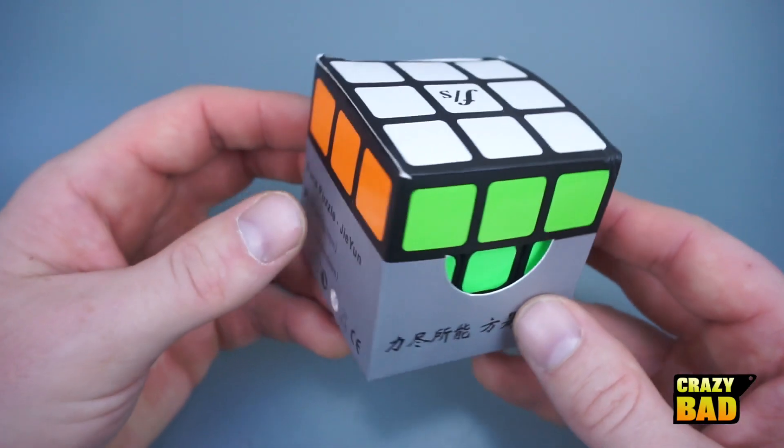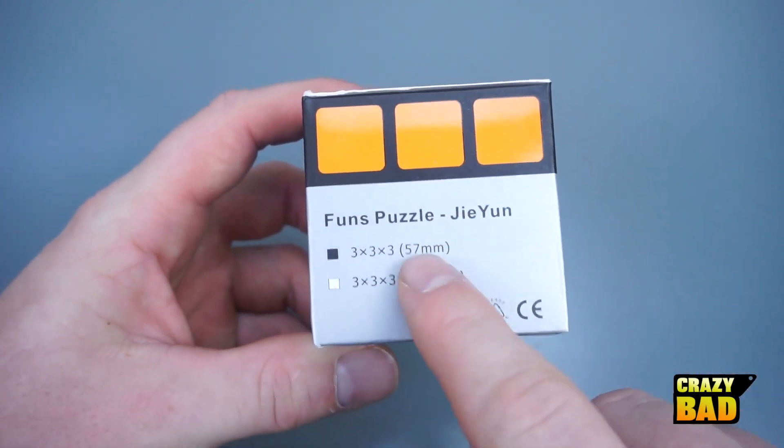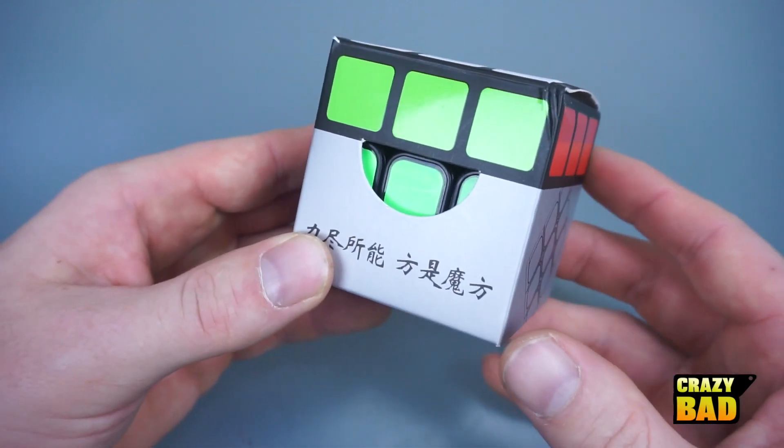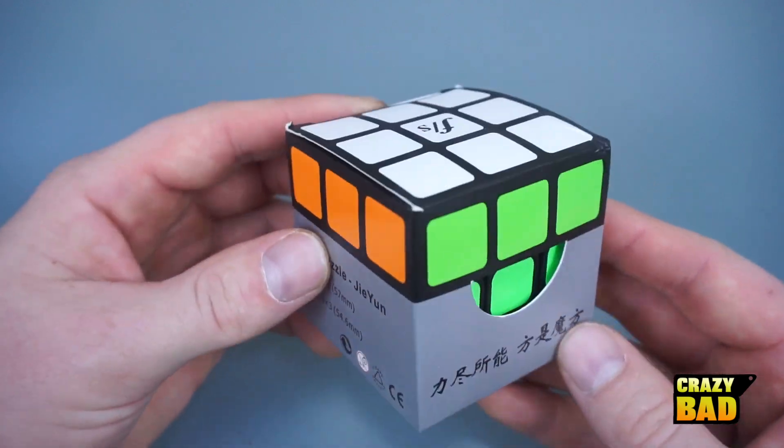Hello everybody, in today's video we're going to be taking a look at the Fangshi JieYun. This is the newest Fangshi that's come out. This is the 57 millimeter version. It didn't just come out, it came out a little while ago and I ordered it from The Cubicle. I just haven't gotten around to reviewing it yet.